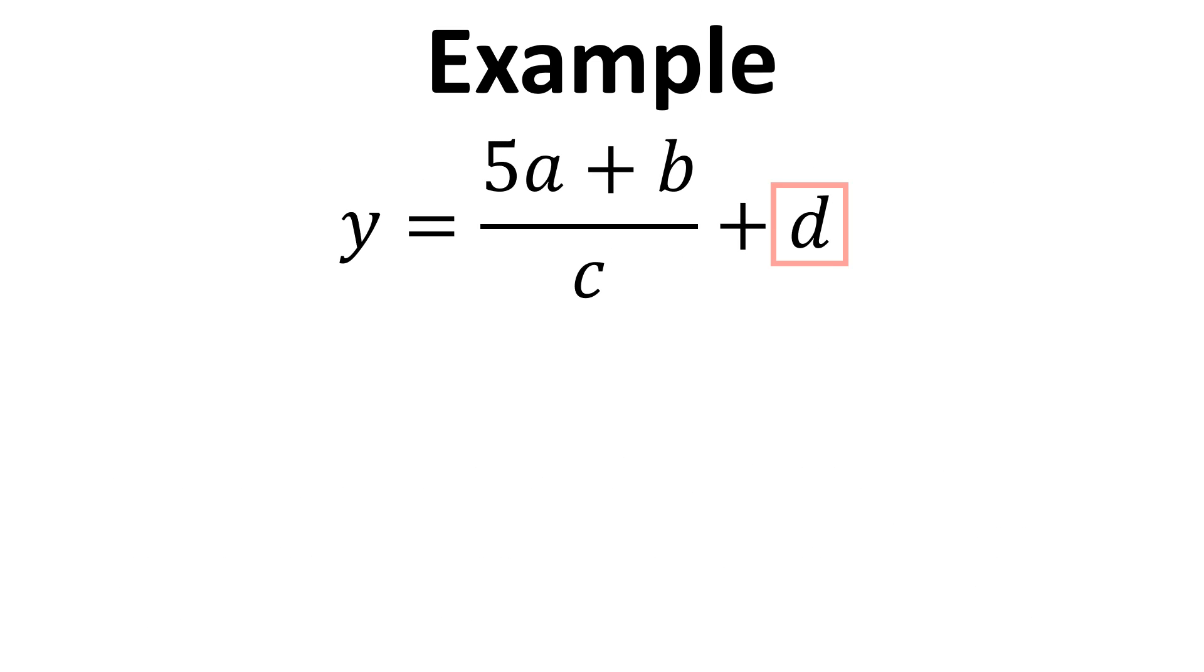So let's take a look at this. First of all, D is the one that's furthest away and least connected to A, so we're going to remove D first. We subtract D from both sides and then D cancels on the right hand side. That leaves us Y minus D equals 5A plus B over C.